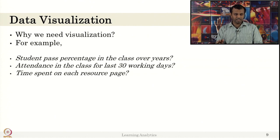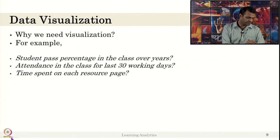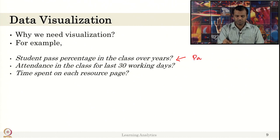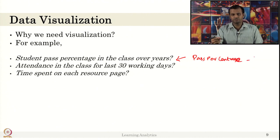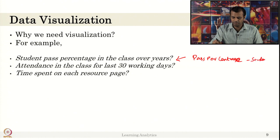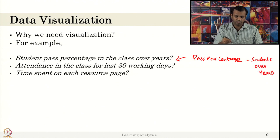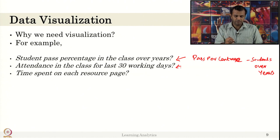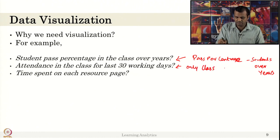More detailed and fine-grained is the time spent on each resource page. The first example was at a more abstract level — for example, pass percentage considers a group of students over years, so n will be large. Then it boils down to a particular class — say your class has 50 students over 30 days, so n is smaller. Now we come back to one particular resource page — say the PDF on introduction. What is the average time all students spent on this introduction PDF? This data can be collected from a TEL environment, a MOOC, or Moodle. Data can be collected at different levels.